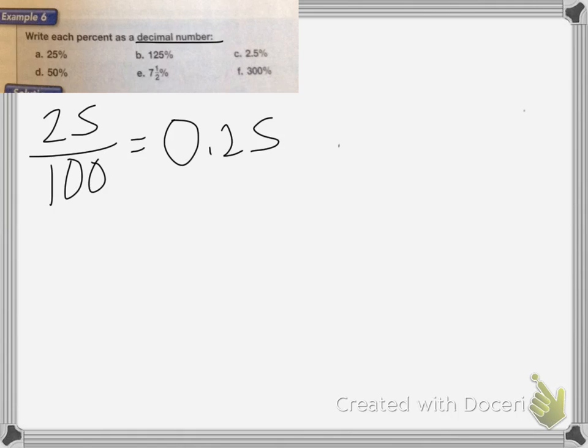For B, 125%, oh, I'm supposed to write each as a decimal, so sorry, we had 25 over 100, and then that as a decimal would have been 0.25, so that was A.